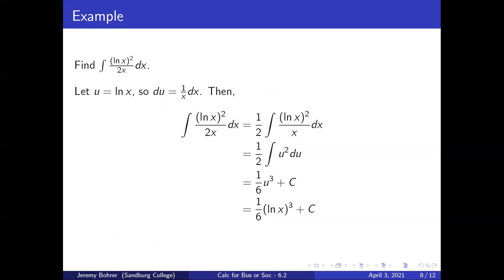Find the integral of the natural log of x squared over 2x dx. We let u equal the natural log of x, so du equals 1 over x dx. Then the integral equals one-half times the integral of the natural log of x squared over x dx, which is one-half times the integral of u squared du, which is one-sixth u cubed plus c, equal to one-sixth times the natural log of x raised to the third power plus c.